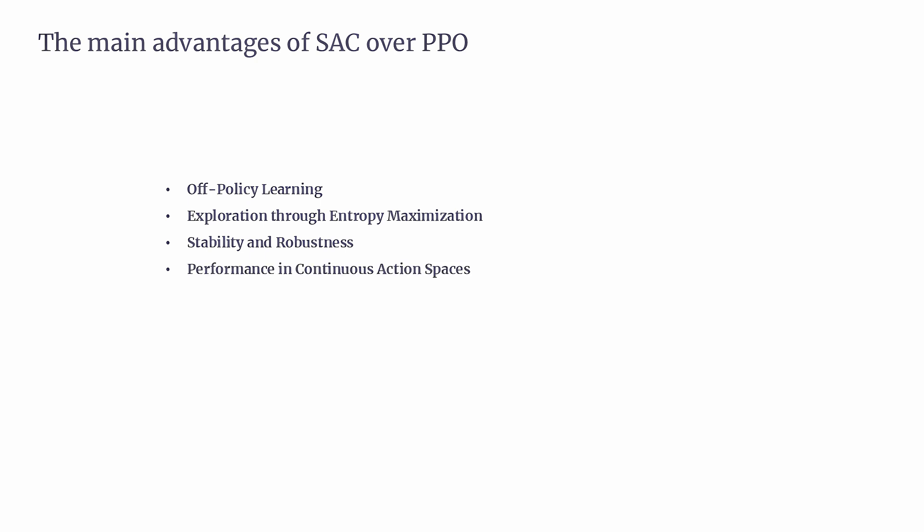Fourth, performance in continuous action spaces: SAC is designed for continuous action spaces, excelling in tasks that require fine control such as robotic manipulation or complex simulations. The stochastic policy makes it particularly suited for smoothly selecting actions across a continuous range. PPO can handle both discrete and continuous action spaces, but its performance in continuous tasks may not be as fine-tuned as SAC's. Fifth, sample efficiency in expensive environments: SAC is more sample efficient where collecting new data is expensive, since it can reuse past experiences thanks to being off-policy. PPO, being on-policy, may require more new data and thus be less efficient in such environments.